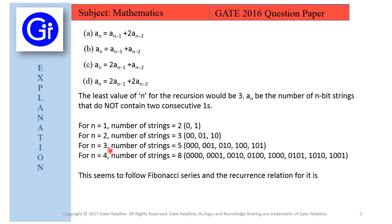For n=3, the acceptable strings would be 000, 001, 010, 100, and 101. So the total number is 5. We can observe that for the recurrence, the output is a_2 + a_1, which is 3 + 2 = 5.